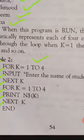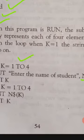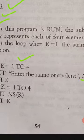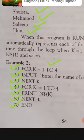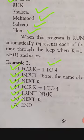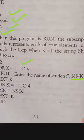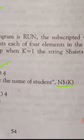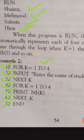Jab pehla loop start hoga, jab pehli value K ki hogi 1, to woh aap se poochhe ga 'Enter the name of the student' - aap pehla name enter karein ge. Jab K ki value hogi 2, woh aap se next value poochhe ga. Aap is mein second student ka name enter karein ge. Isi tarah se third aur fourth. Jab yeh loop finish ho jaaye ga to next loop start hoga, aur jab K ki pehli value hogi 1 to jo aap ne pehla name enter kiya hoga woh screen par display ho jaaye ga. Isi tareeqe se second, third aur fourth name screen par display ho jaaye ga. Is tareeqe se array ko fill bhi kiya ja sakta hai aur print bhi kiya ja sakta hai.